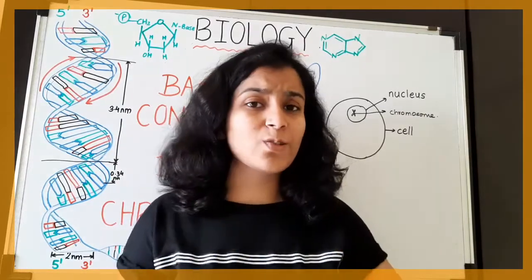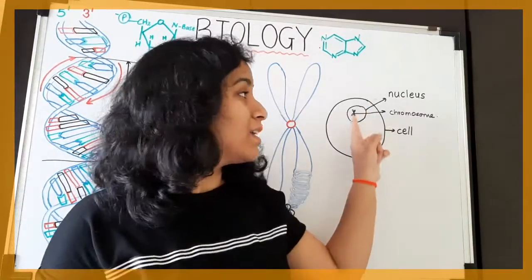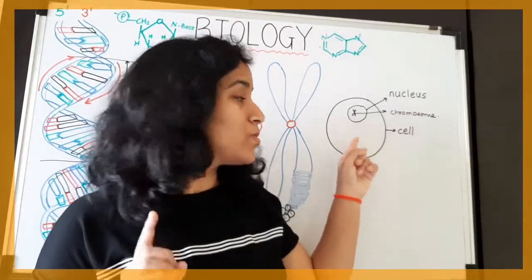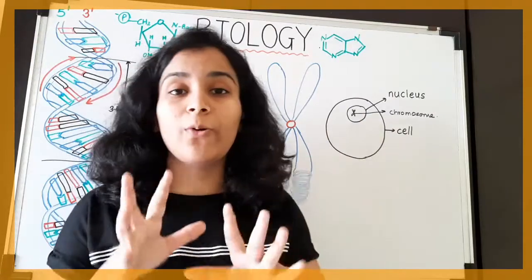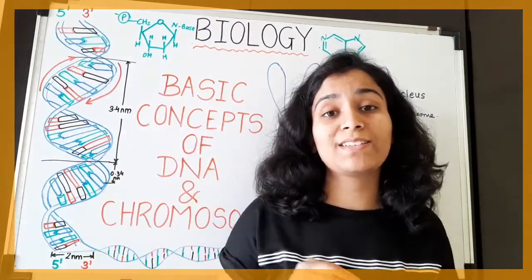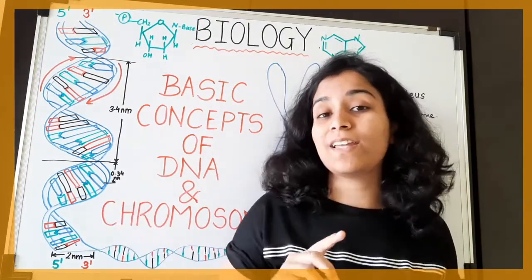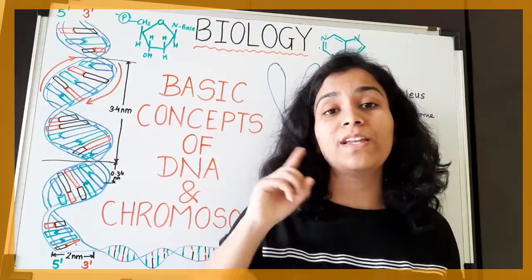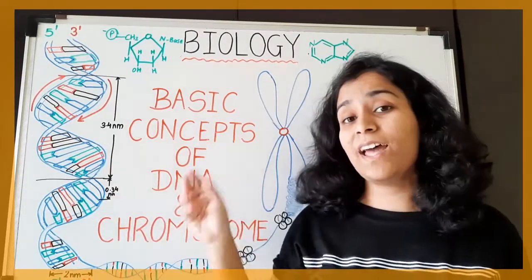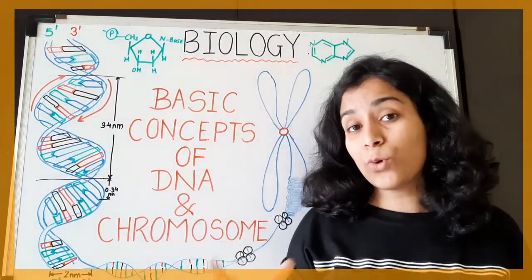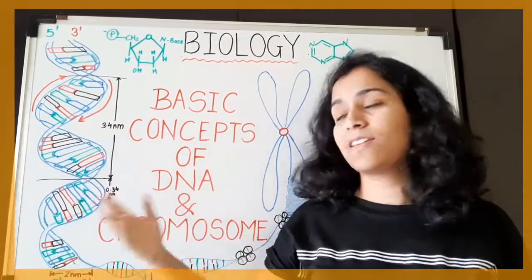If you zoom inside a nucleated cell — one that has a nucleus — within that cell there is a nucleus, and within this nucleus there are chromosomes. In a normal human body, there are 23 pairs of chromosomes, which means 46 chromosomes per nucleated cell. These chromosomes are made up of DNA, tightly coiled on histone proteins and non-histone proteins, and on this DNA the genes are present.